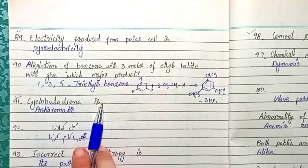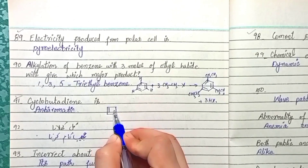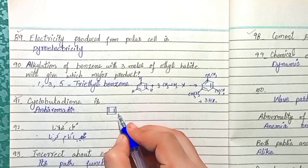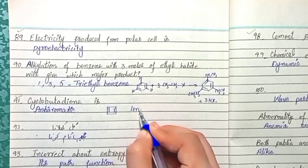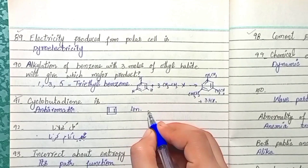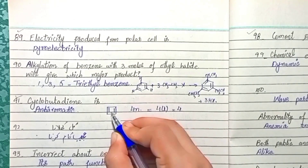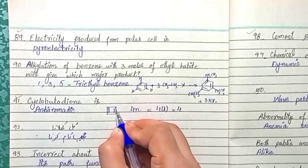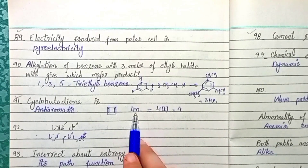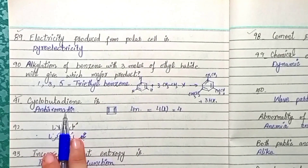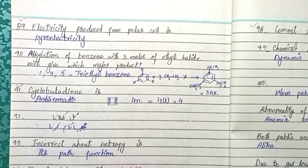Question 91: Cyclobutadiene is an anti-aromatic compound. Its structure does not follow Hückel's rule; instead, the number of pi electrons follows the 4n rule. With n = 1, this gives 4 pi electrons (two pi bonds, each with 2 electrons). When the number of pi electrons equals 4n, the compound is anti-aromatic, and anti-aromatic substances are highly unstable.